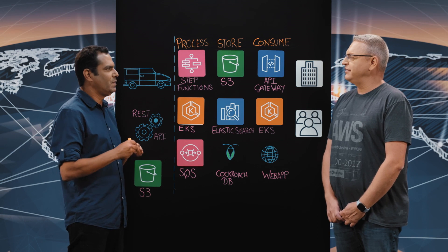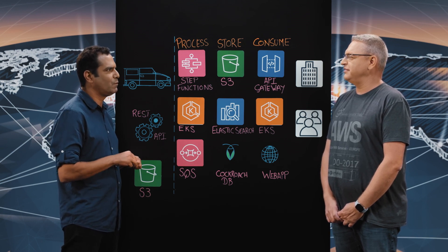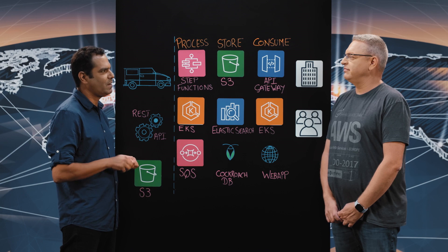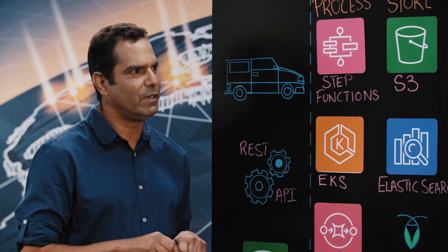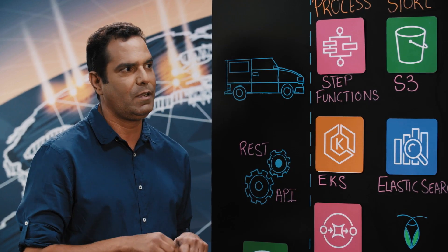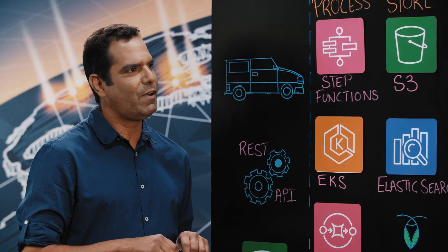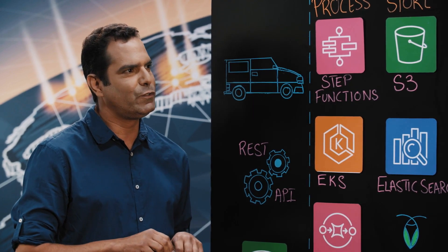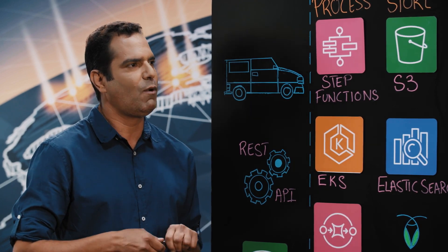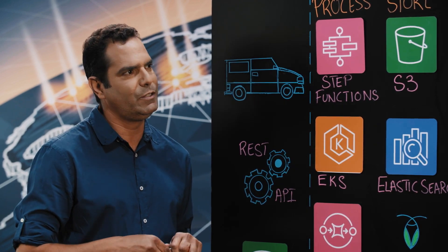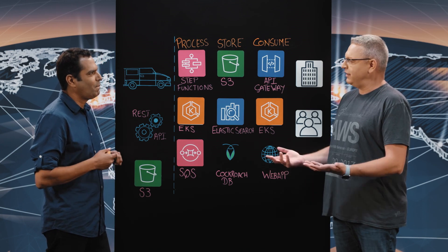Mobileye is a world leader company in camera-based driver assistance systems with over 70 million Mobileye inside vehicles around the world. It is also a world leader company in autonomous driver systems. In addition, Mobileye is providing a full suite of data services using an award-winning road mapping technology on vehicles. And this is the theme you are coming from? Tell us how you do that.